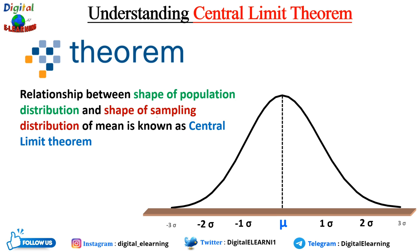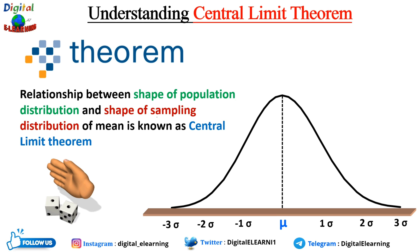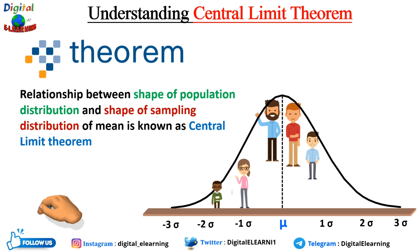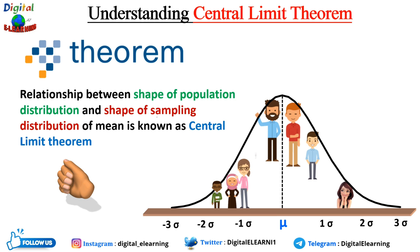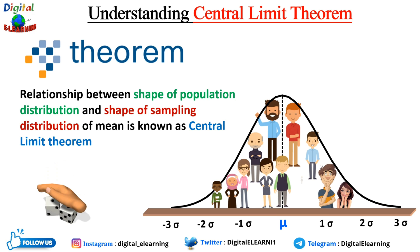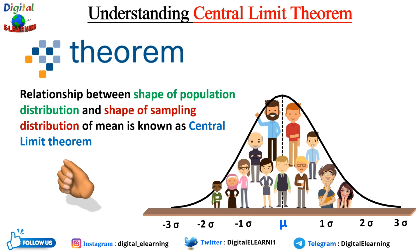Let's take an example of a fair rolling dice. The more times each person rolls a dice, the more likely the shape of the distribution of the mean tends to look like a normally distributed graph.